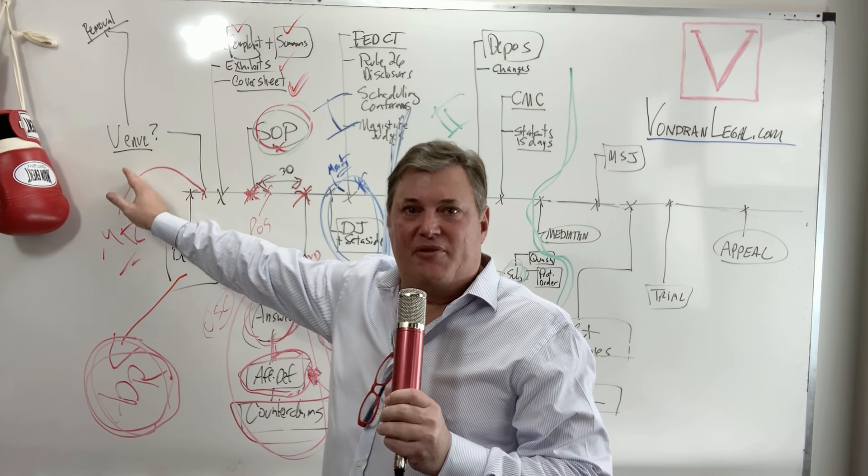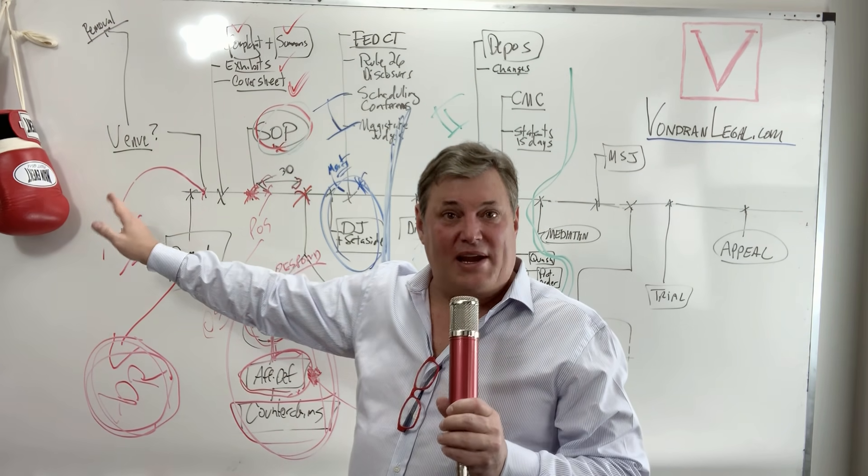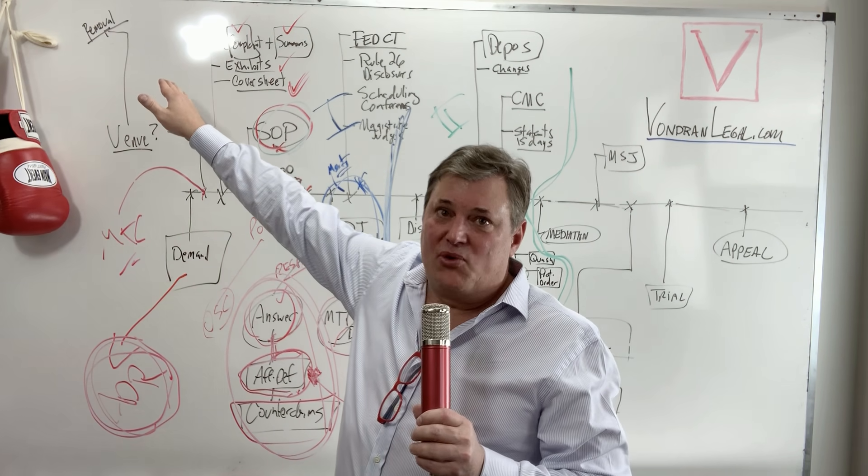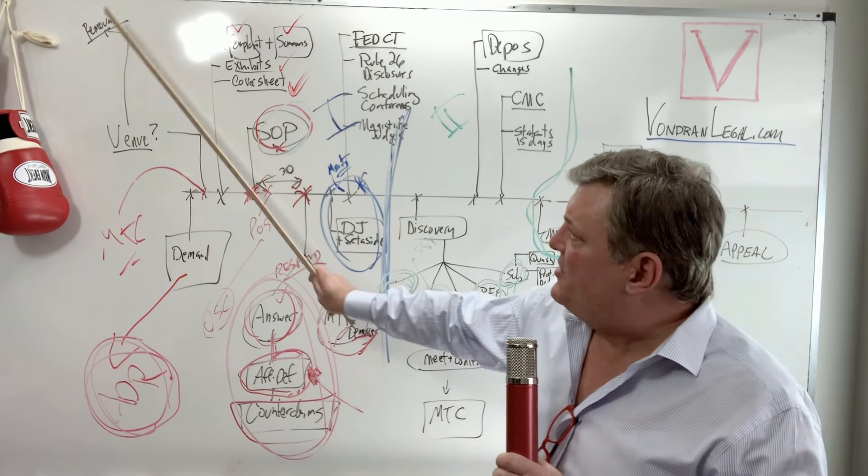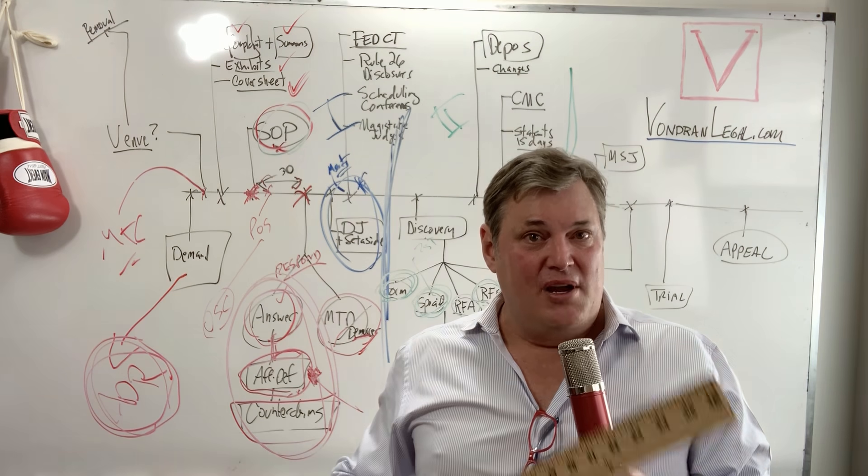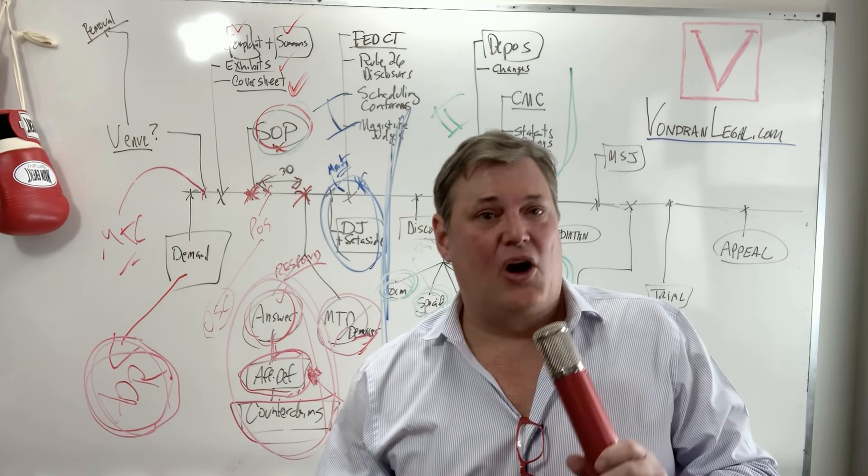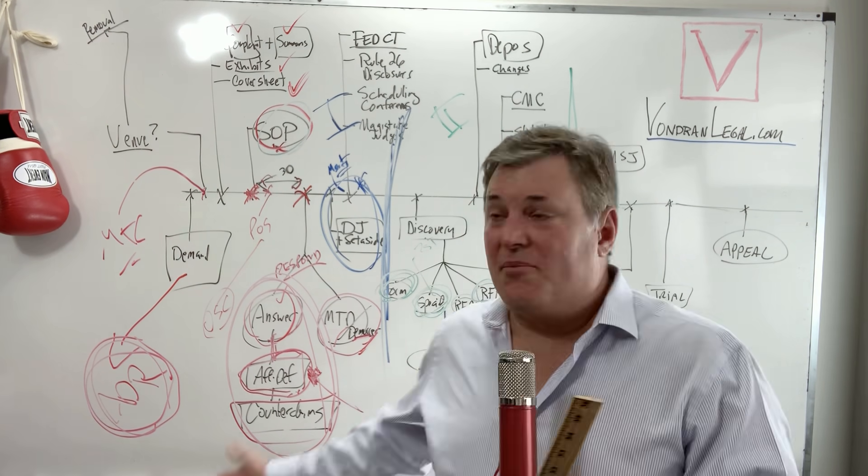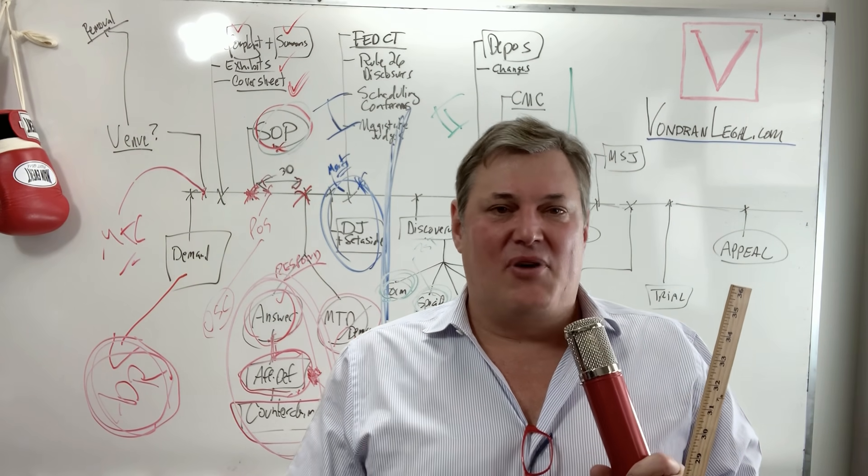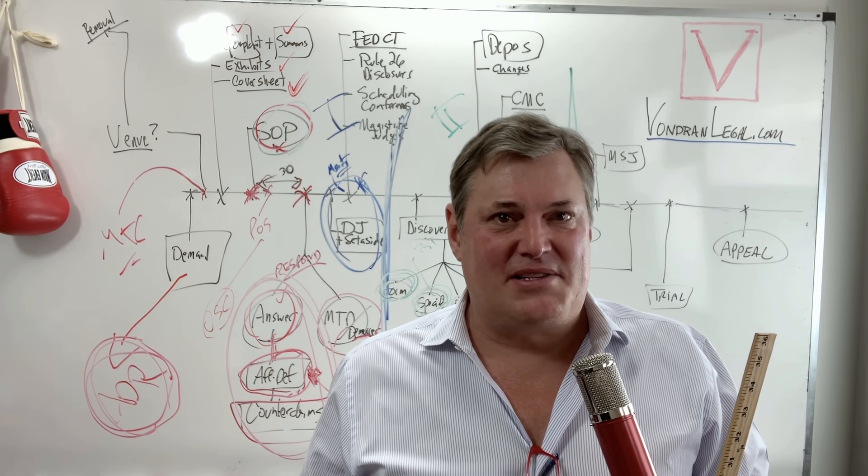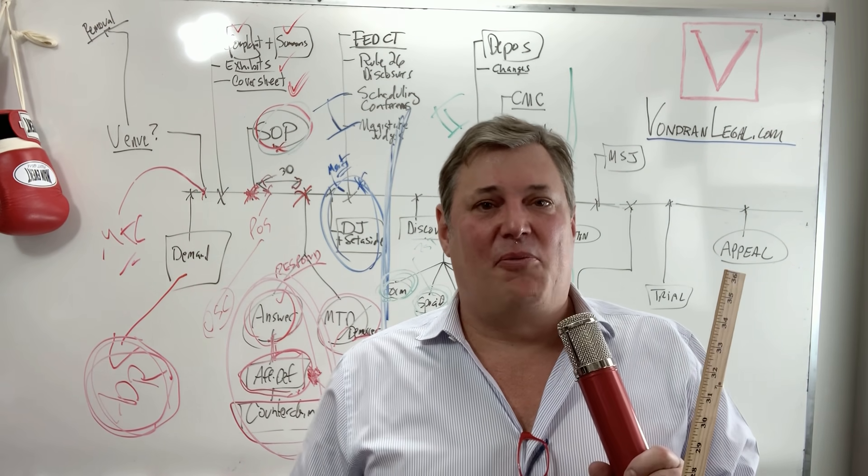Also here again, I'm going to put, I have venue venue here at the very beginning. You always want to make sure that you're in the right court venue. And there's also removal way up there, way up high. If you can see that point to it with my little yardstick venue and removal. So this is where a case can be removed from state court to federal court, something that you think about at the early part of the case. So I hope this has been helpful. If you've enjoyed it, man, come on. I'm working hard here and give me a like, give me a thumbs up.